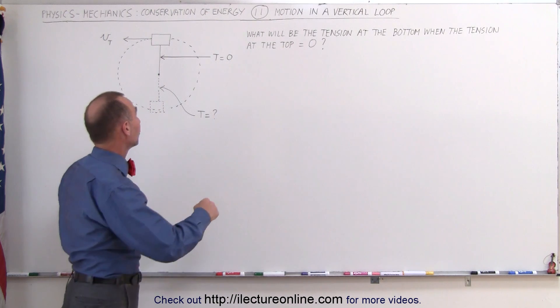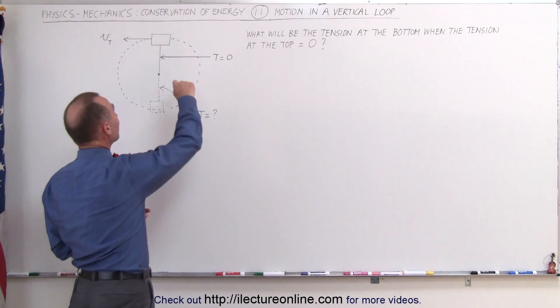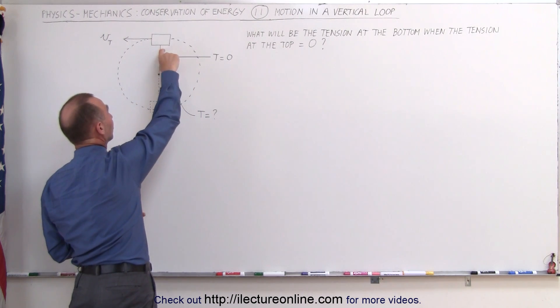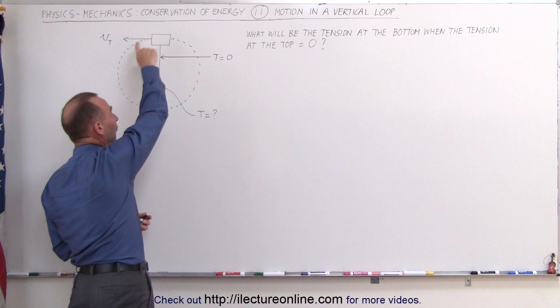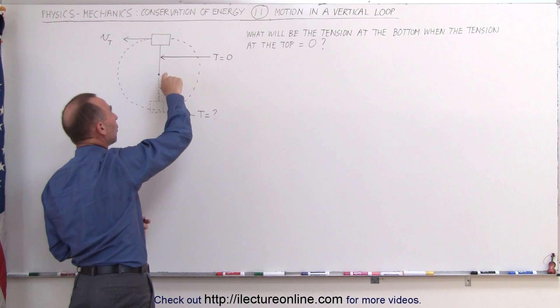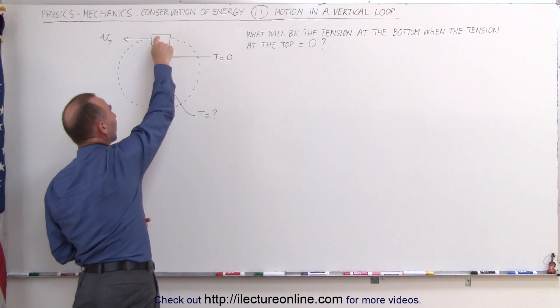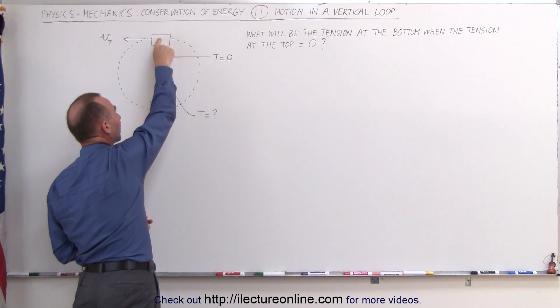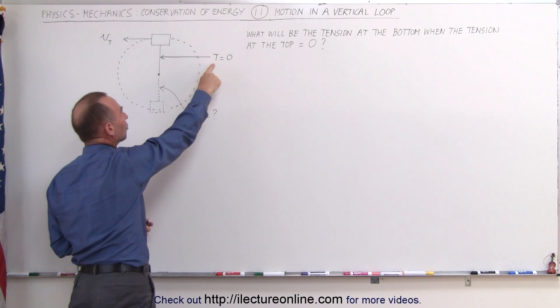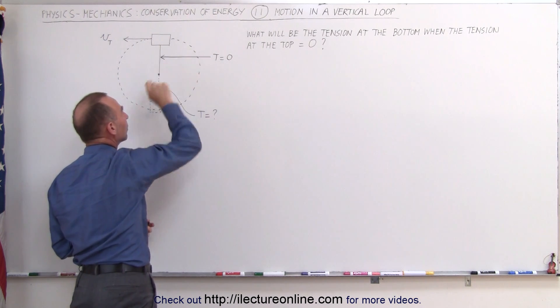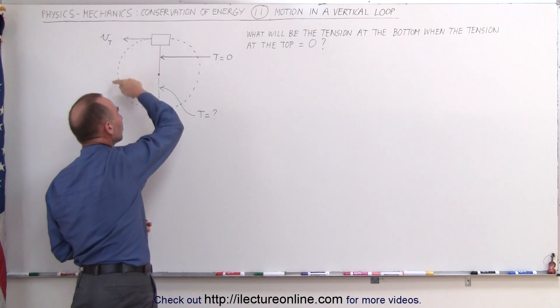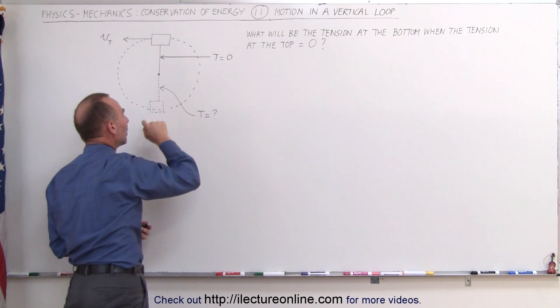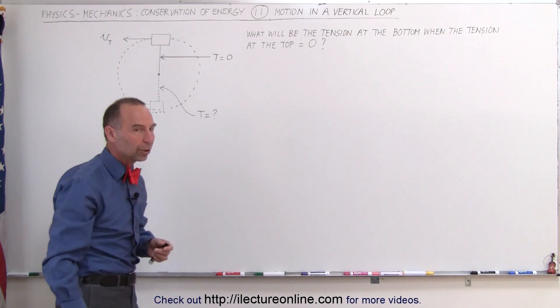The problem reads as follows. What if you have a mass that's attached to a string, which is turning in a vertical loop, when it's at the very top point right here, the tension in the string equals zero. What will be the tension in the string when it gets to the bottom of the loop?